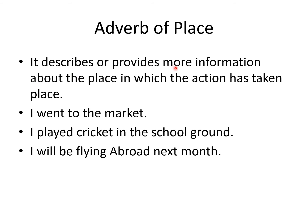Adverb of place describes or provides more information about the place in which the action has taken place. For example, 'I went to the market' — the going is described by where: to the market. 'I played cricket at the school ground' — the verb 'play' is described by 'school ground', where I was playing. 'I will be flying abroad next month' — 'abroad' shows the adverb of place and 'next month' shows the adverb of time.